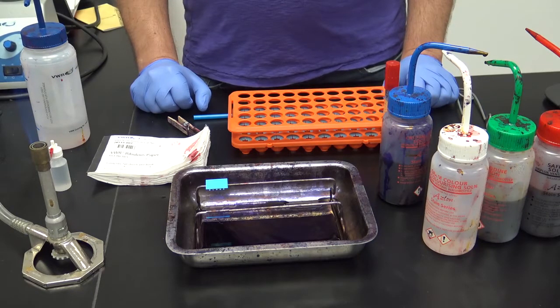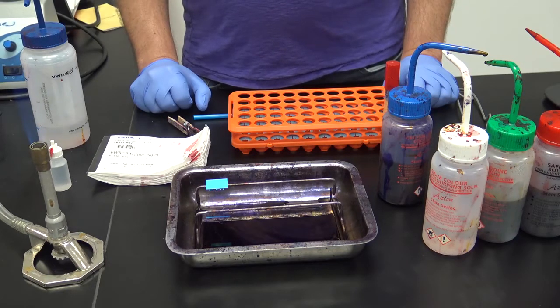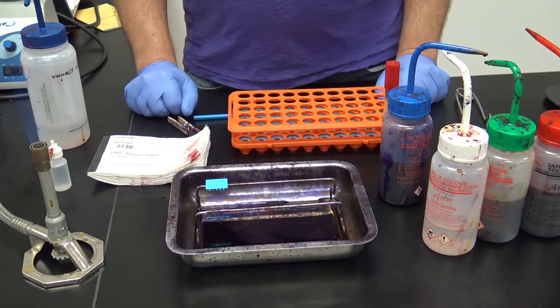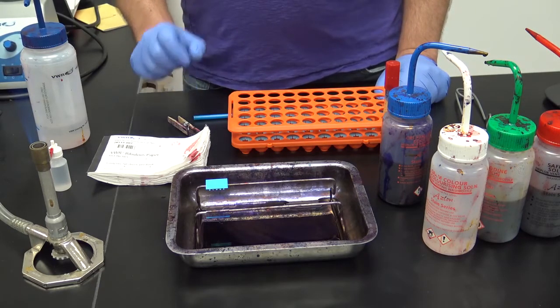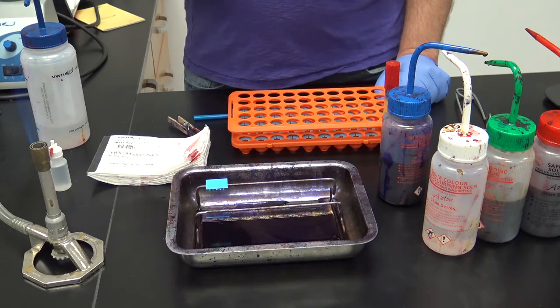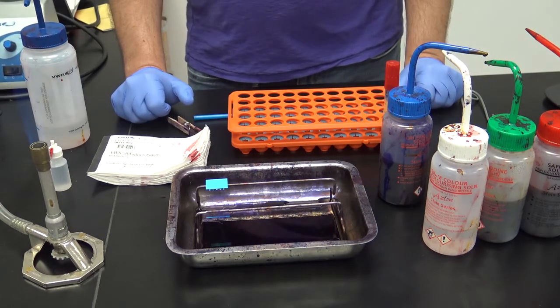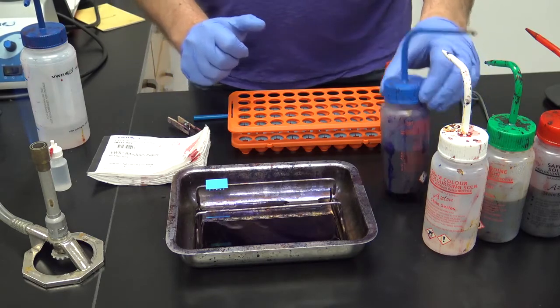The first step of this technique is to again create a bacterial smear. Heat fix it, and follow the procedure spelled out in your laboratory manual. Each stain has a specific time it should be kept on the organism. When applying the stain, place enough on the slide to cover the specimen, like so.